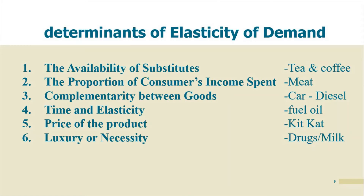Now let's go through the determinants of elasticity. First is substitutes — if the price of tea is increasing, we can avoid buying tea and start buying coffee because coffee is cheaper. Second is the proportion of income spent — if a large share of a person's income is spent on a commodity and its price rises, they will stop buying it. For example, if the price of meat increases, it goes out of your budget.